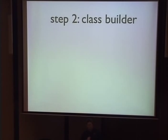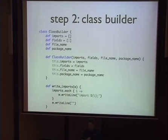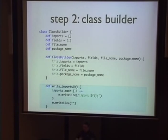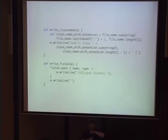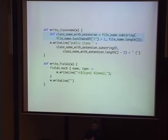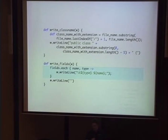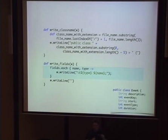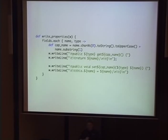We built another little piece of Groovy called a class builder that takes in what imports you want, the fields, the file name, and the package name. We set internal values for all those. It writes out the imports — it was the same imports all the time, so that was just a static list. This writes out the class name by figuring out based on the table name what the class name should be, and writes out public class at the top of the file. To write out all the fields, we write out the type and the name of the field. Then we wrote out generated getter and setter properties.